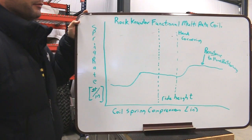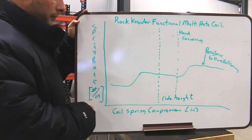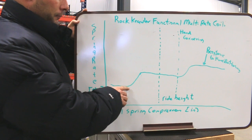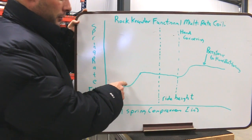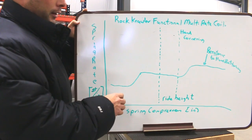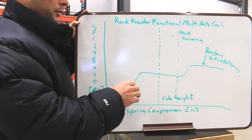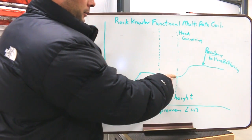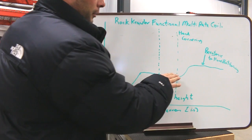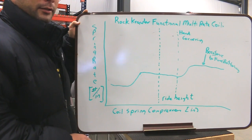Here we have an example of our RockCrawler functional multi-rate coil — for instance, how a JK front coil operates. Looking at spring rate versus coil spring compression, you have a very soft linear rate for the beginning section of the coil, where sometimes coils would be touching each other or in a dead zone. Then they smoothly transition to a soft ride rate over a specific area of coil operation. Where we typically experience people pushing their vehicles into hard cornering, we start a smooth transition up into a firmer rate to help vehicle handling, ending with a pretty firm rate designed to resist hard bottoming.